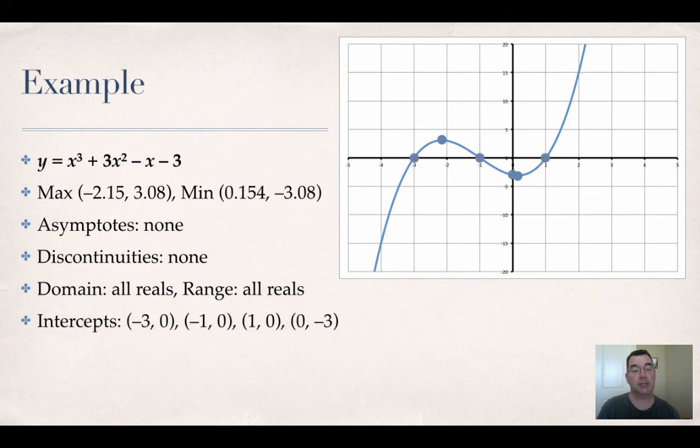I have four intercepts. One is at (-3, 0), one at (-1, 0), one at (1, 0), and the last one at (0, -3). So three x-intercepts and one y-intercept.